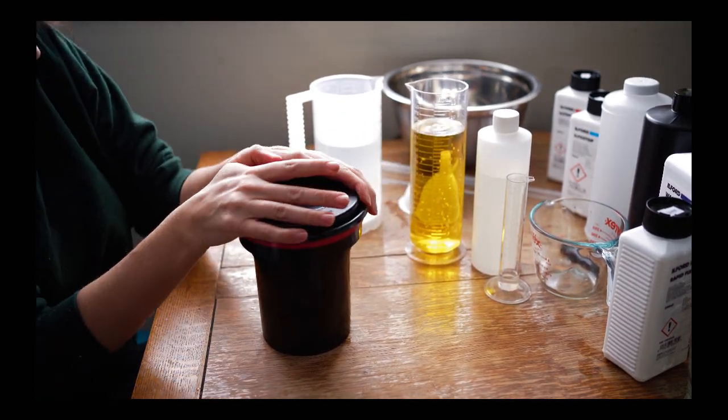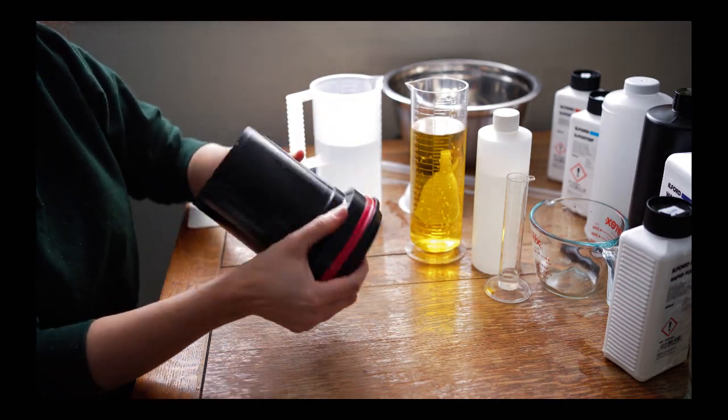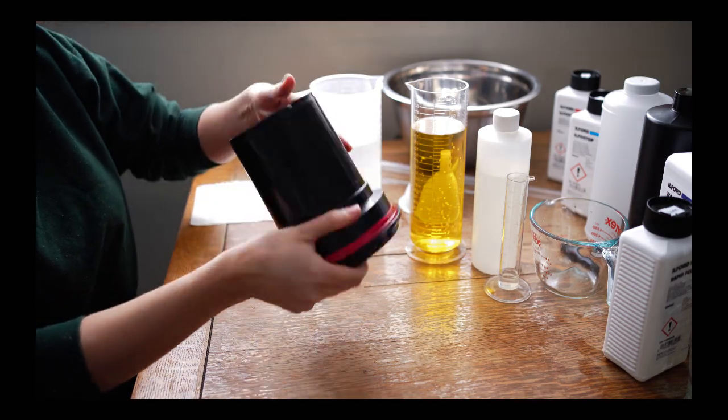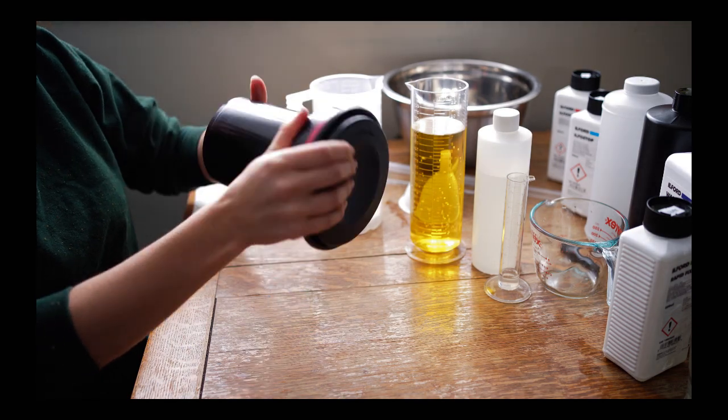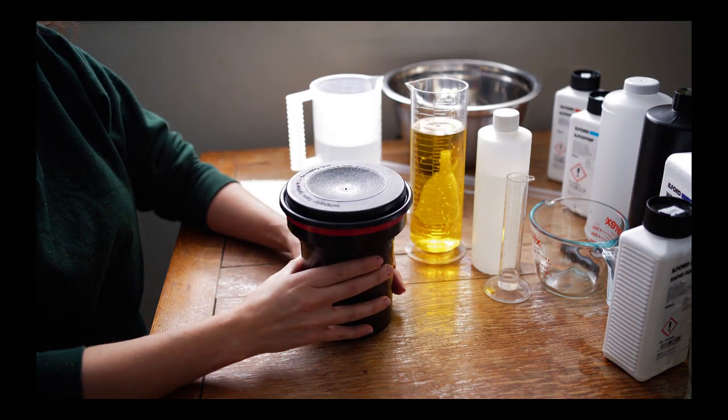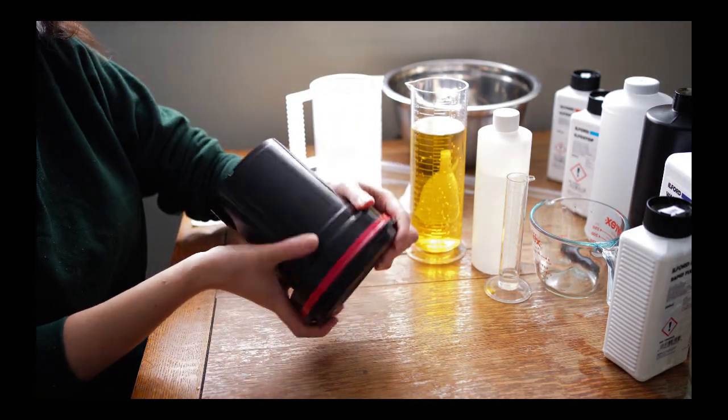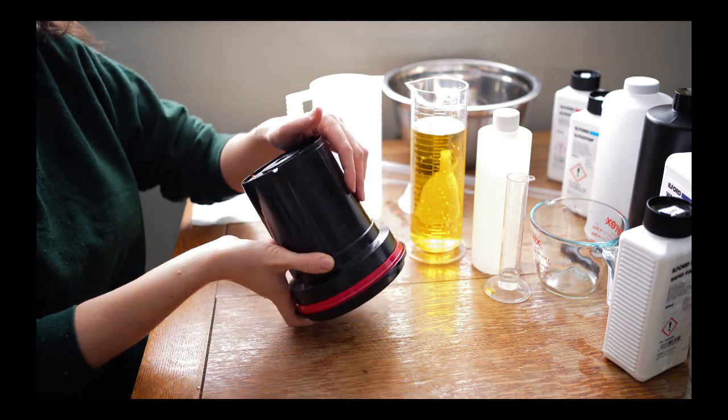So now I think the important thing was to agitate it. So I'm going to start the timer. The important thing is going to be to agitate it. Three. Four. Five. Six. Seven. Eight. Nine. Ten. The first ten seconds. Drop it down. And then I'm going to agitate it every 30 seconds for the rest of the eight minute timer.